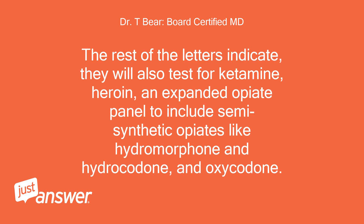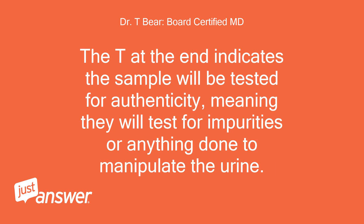The rest of the letters indicate they will also test for ketamine, heroin, and an expanded opiate panel to include semi-synthetic opiates like hydromorphone and hydrocodone, and oxycodone. The T at the end indicates the sample will be tested for authenticity, meaning they will test for impurities or anything done to manipulate the urine.